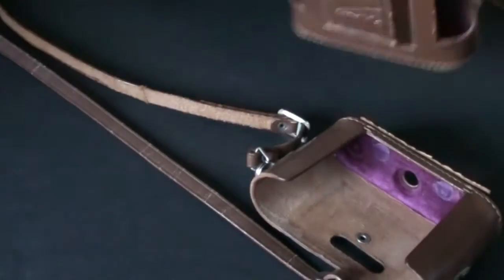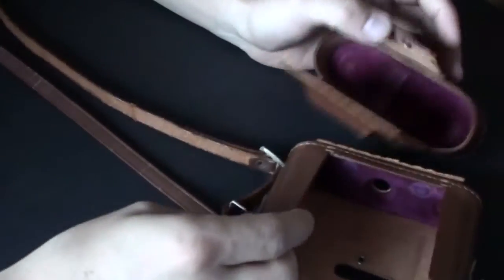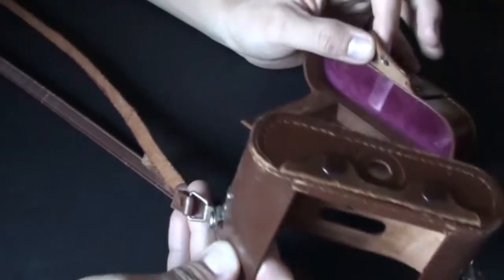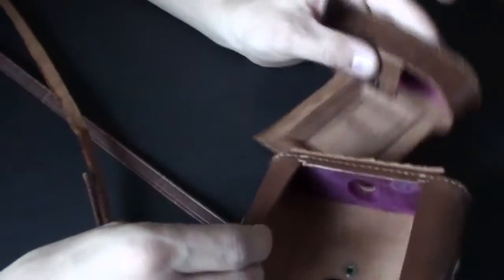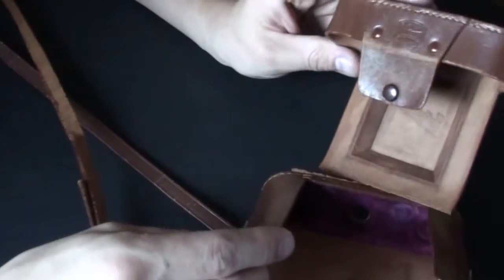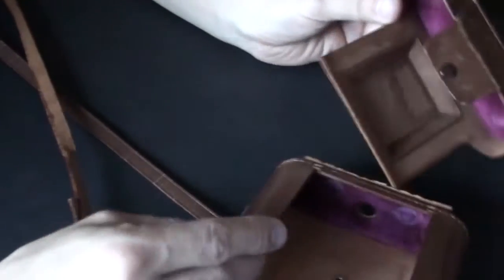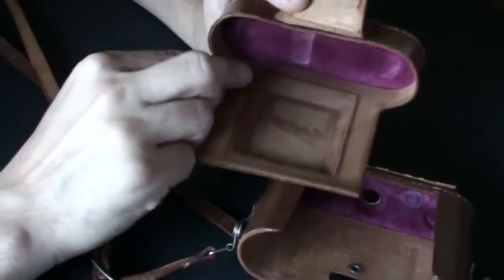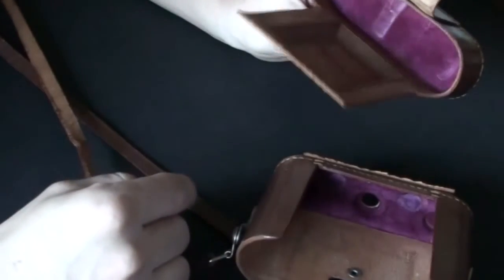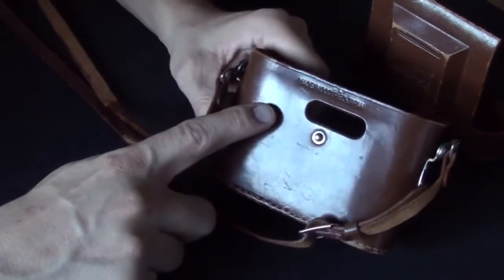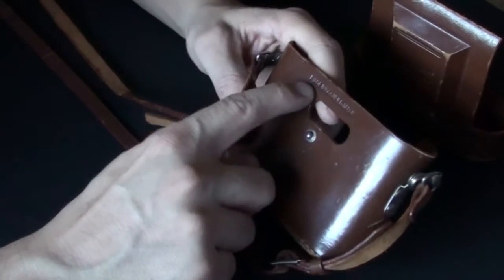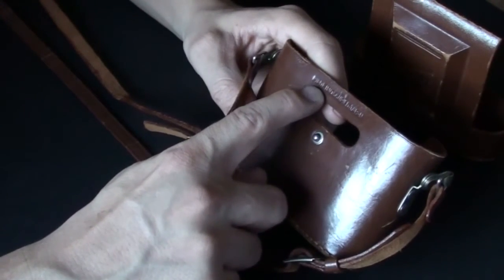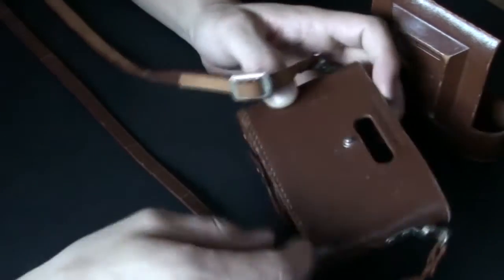The camera case itself is kind of falling apart, but it's still there, so I'm going to keep it. It's nicely, it has nice, I can't call it felt, I don't know what this is, fabric in there. And what I like about it is this stamped writing, made in occupied Japan, which is really cool.